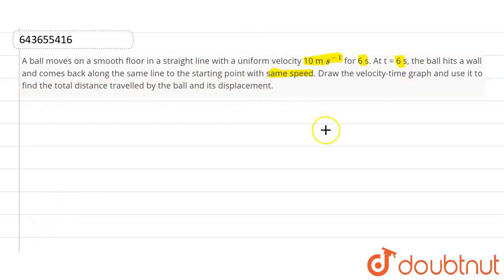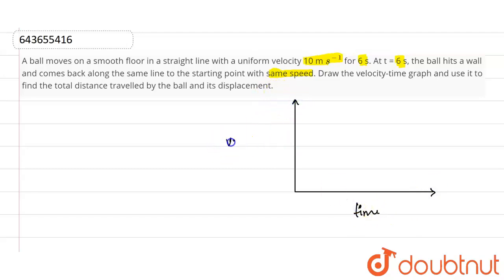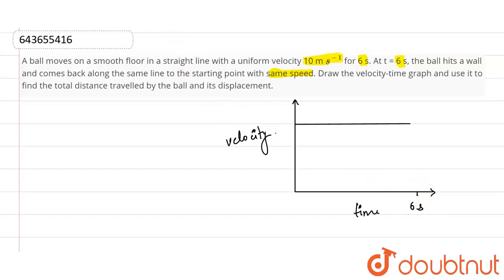Draw the velocity-time graph and use it to find the total distance traveled by the ball and its displacement. The velocity-time graph is going to be something like this — the horizontal axis represents time, the vertical axis represents velocity. The ball moves at a uniform velocity of 10 meters per second for six seconds, and at six seconds there is a wall, right here.